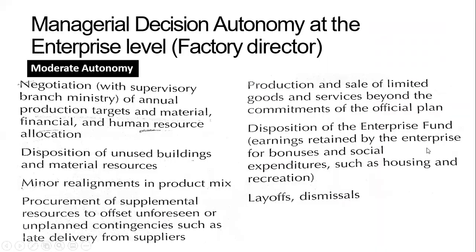On those things where the company director has moderate autonomy, for instance, you can negotiate with the branch ministry about the annual targets — whatever you can produce, any material you might need, your factory's financial resources, how much capital you will need to achieve a target, or how many people — human resources — you would need to complete the task given to you by the branch ministry.